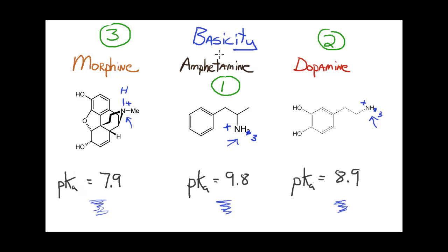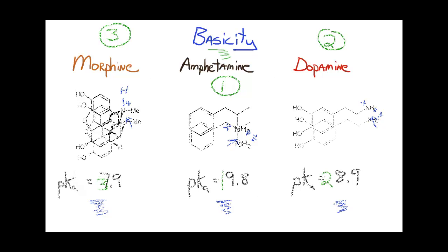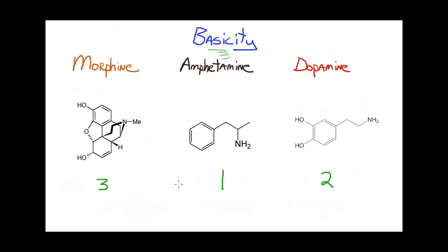So back to basicity, how can we look at the structures of these molecules and rationalize the relative basicities? I'm going to go ahead and redraw these molecules and get rid of the protonated version to justify the basicities. So I now want to take a look at the structure of the base form of these compounds and rationalize the relative basicity of them, knowing that amphetamine is the strongest base, dopamine the second strongest, and morphine the weakest.